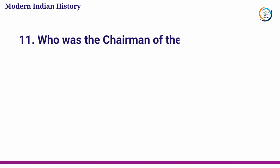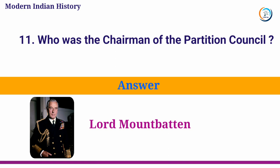Who was the chairman of the Partition Council? Answer: Lord Mountbatten.